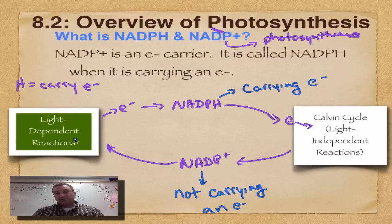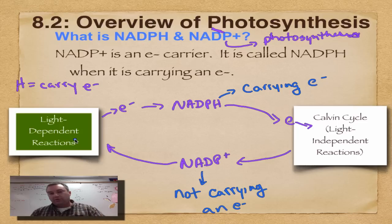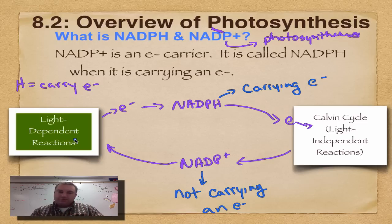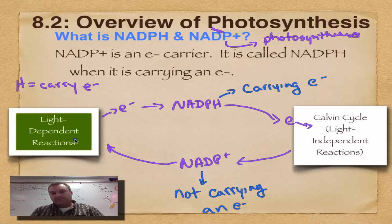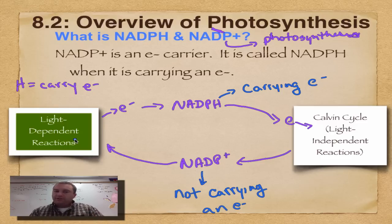The light-dependent reactions give electrons. The Calvin cycle takes the electrons, and these electrons are going to be used to make glucose. I just want to keep it simple. Think of NADP as the pickup truck for electrons during photosynthesis — NADPH is full, NADP+ is empty. Try not to get confused; you might want to look at this episode a couple of times.